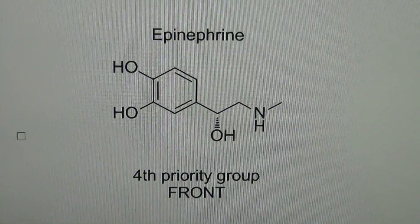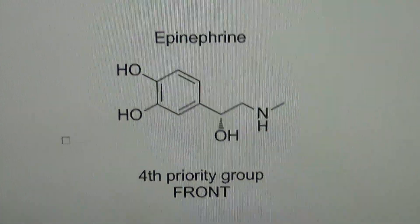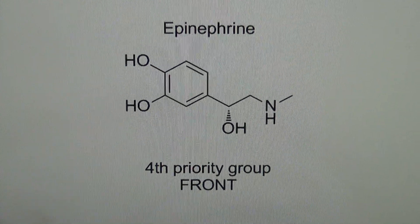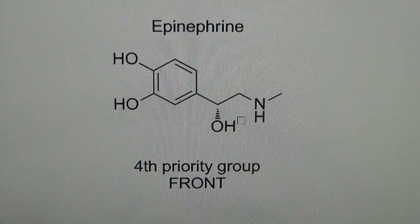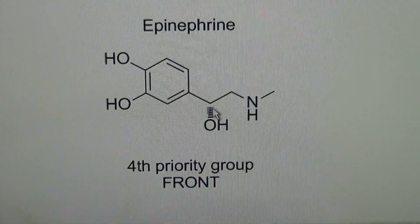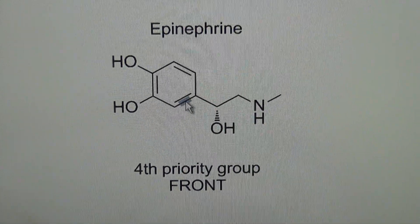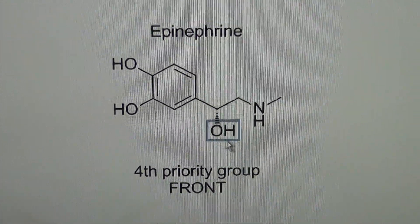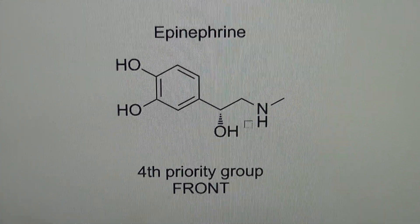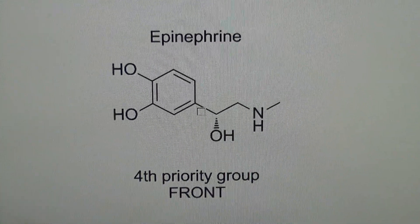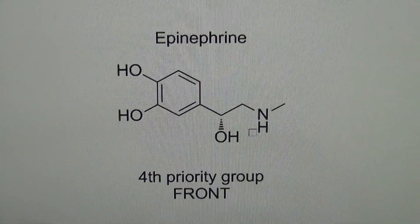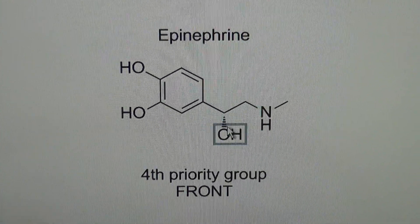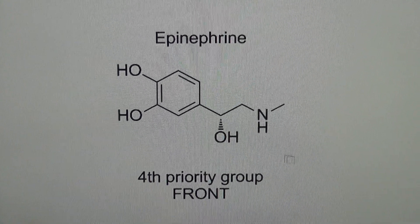Now let's look at another case from the peripheral nervous system drugs. This is epinephrine, also an endogenous compound in the human body that's important for the peripheral nervous system. We look and see there's just one asymmetric carbon right here. Notice it has an oxygen bonded directly to it, and the other atoms in the other directions are carbons. So this oxygen-containing group will be the top priority.